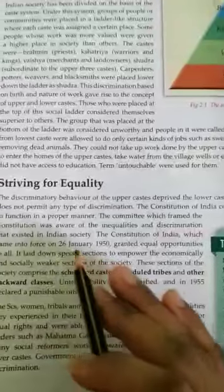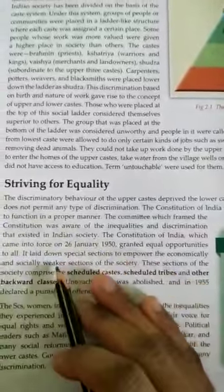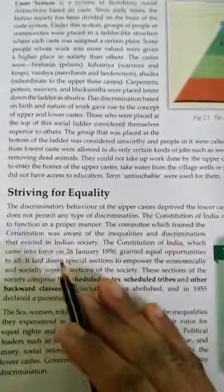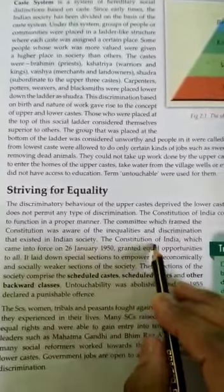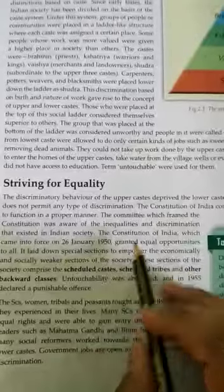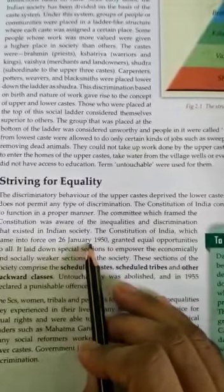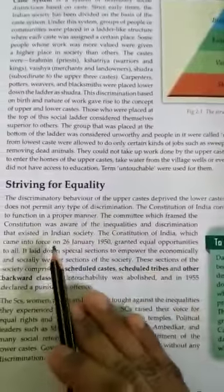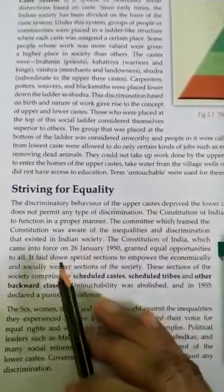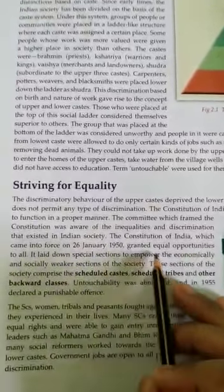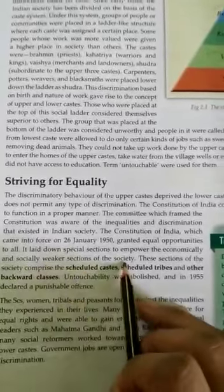The committee which framed the constitution was aware of the inequalities and discrimination that exist in Indian society. The Constitution of India, which came into force on 26 January 1950, granted equal opportunity to all. It laid down special sections to empower the economically and socially weakest sections of society.